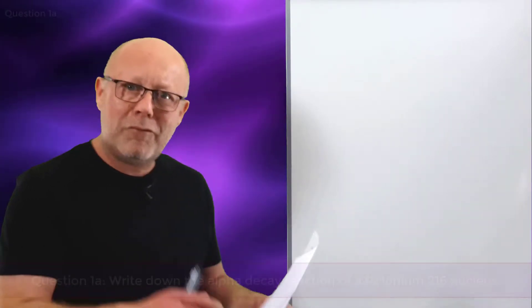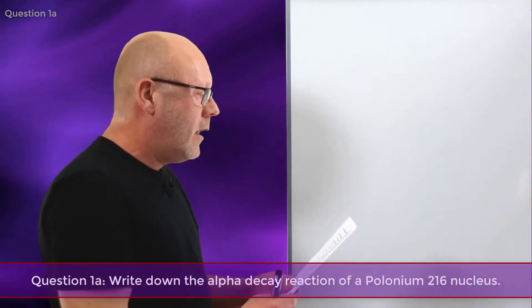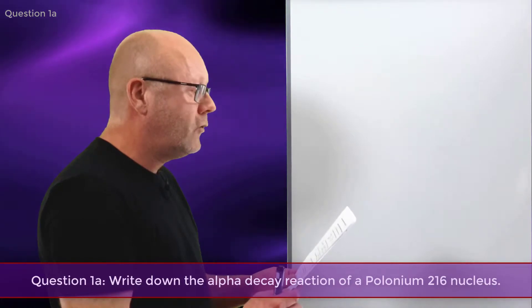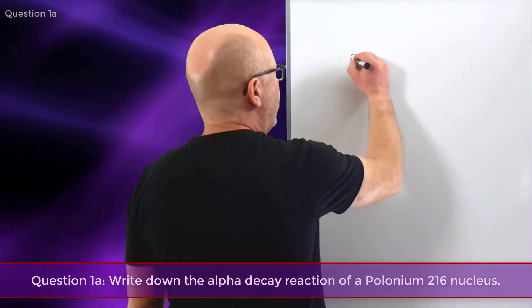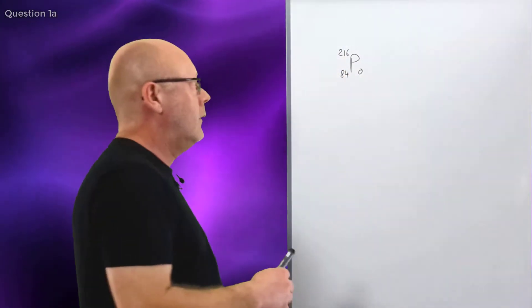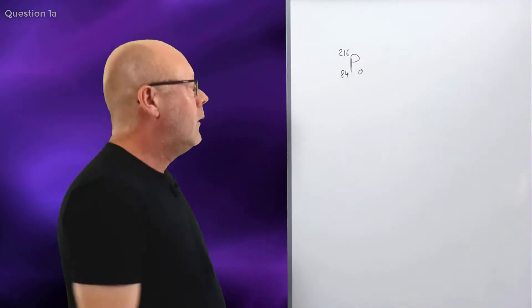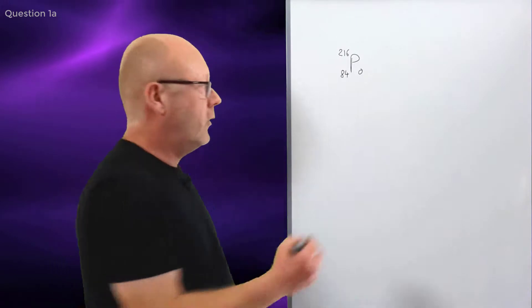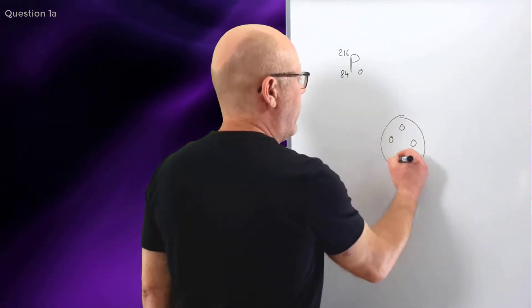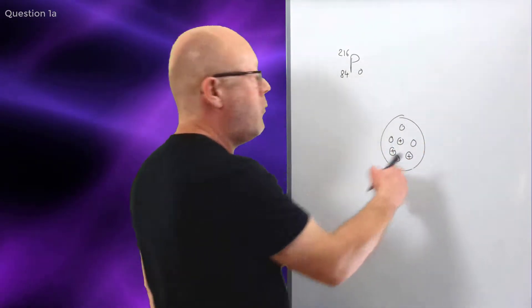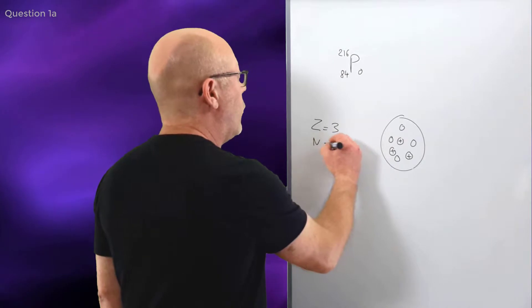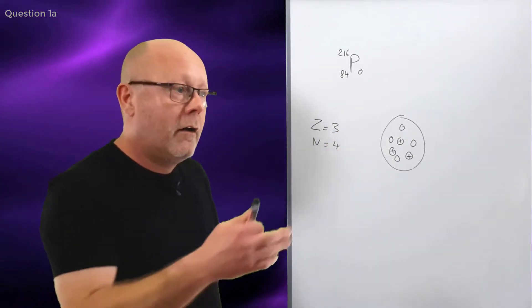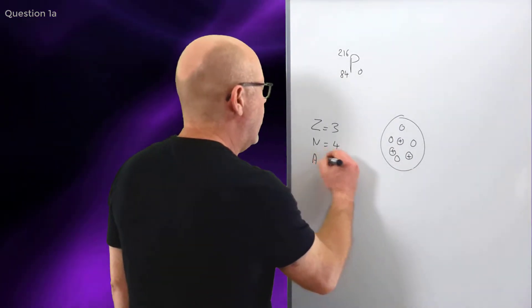So, how did it go? Did you manage to answer the questions? Let's review the questions one by one. Question number one: polonium-216-84 alpha decays into an isotope of lead. Write the corresponding decay reaction. Let's consider the reactant, which is the polonium-216-84. Remember that a nucleus is made of neutrons and protons. If I represent a nucleus with three protons and four neutrons, the number of protons Z is equal to three, the number of neutrons is equal to four, and the total number of nucleons A is equal to seven.